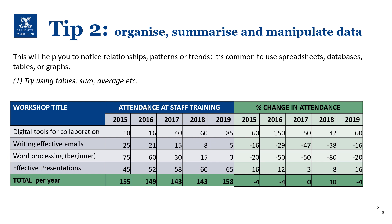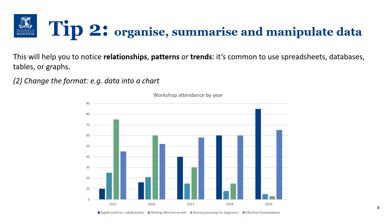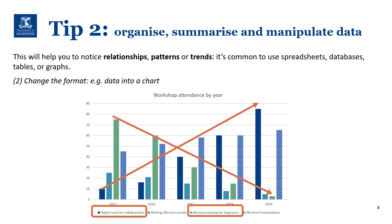From the table, I can now see that overall attendance has been stable over the past five years, but that two workshops have become more popular and two have become less so. If trends are difficult to spot, try changing the format of the data. If we look at the same data in a bar chart, these trends become much clearer. We can see a very clear decline for word processing and a significant increase in digital tools for collaboration.